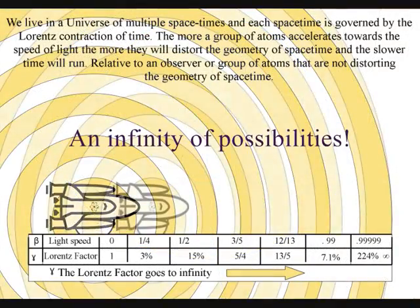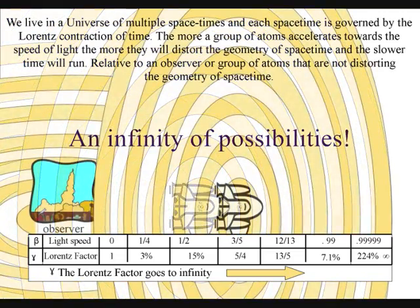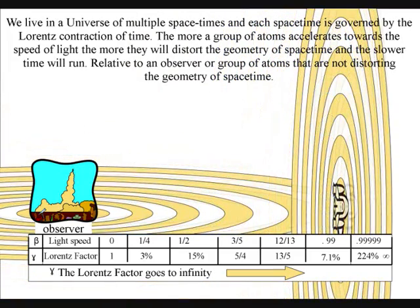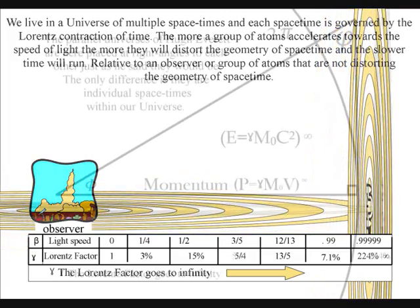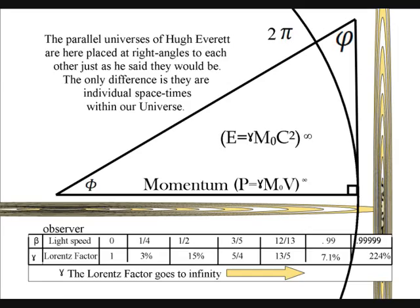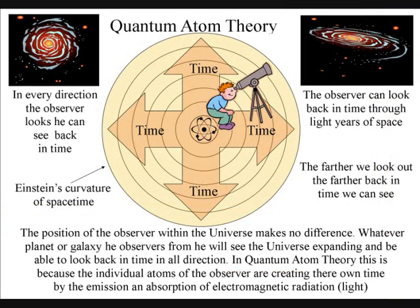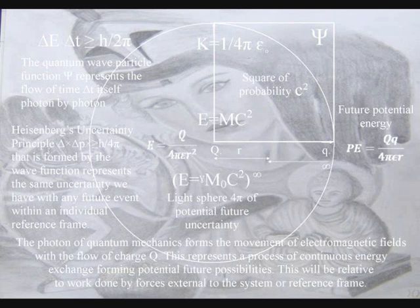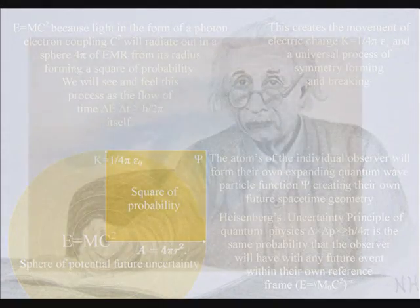We have an infinite number of reference frames within our universe, and because light has momentum and momentum is frame-dependent, each object or observer will have their own reference frame with their own future uncertainty. As time unfolds photon by photon, an observer can look back in time at the beauty of the stars in all directions from the centre of their own reference frame — forming their own space-time by collapsing waves of light into new photon oscillations, forming their own future potential. An artist will take energy and time to create a work of art because the atoms of the hand and eye have bonded together, creating their own potential future.